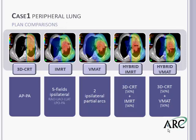Looking from left to right, we have our five plans. The 3D CRT plan was simply an AP/PA. Next to that is our IMRT, which consisted of a five-field ipsilateral arrangement. In the middle is a VMAT plan using two partial arcs contained to the ipsilateral side. Finally, our 50/50 weighted IMRT hybrid and our hybrid VMAT, again 50/50 weighted.